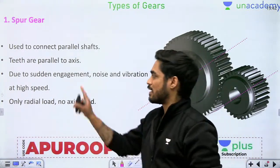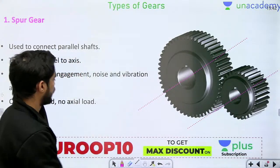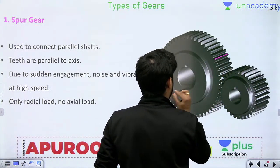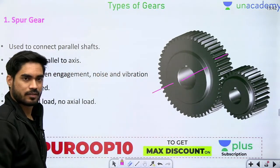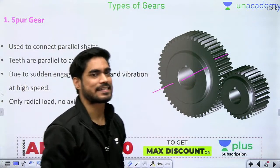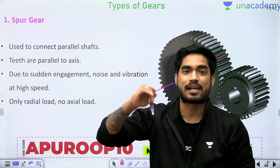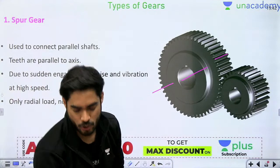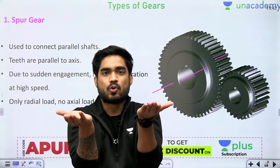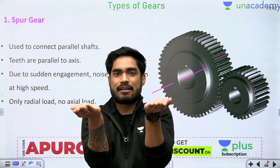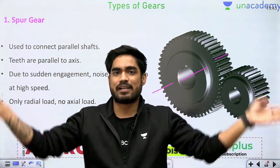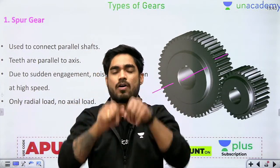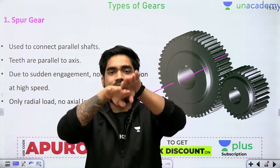The teeth of spur gear are parallel to the axis — that is why manufacturing is comparatively easy, since we only need to cut parallel teeth. However, due to these parallel teeth there is a big disadvantage: when two teeth come in contact with each other, the entire width of teeth comes directly in contact. This causes sudden power transfer — the speed of the second gear jumps from 0 to 100 instantly, rather than increasing gradually. This sudden engagement is the key drawback.